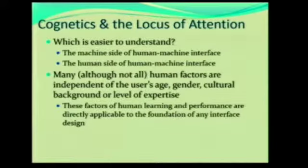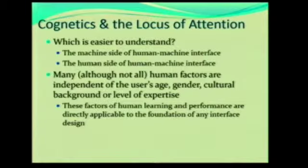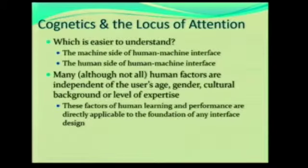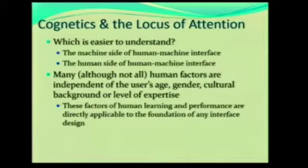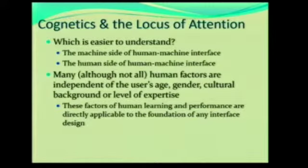We have talked about a lot of things that are fairly consistent in terms of how we work as humans, which makes things easier. But even knowing that, there are actually a lot of human factors — a lot of things about us as humans — that are actually independent of things we may initially think are really important. So age, gender, cultural background, level of expertise — there are a lot of times where you're designing a system where those things don't matter at all.